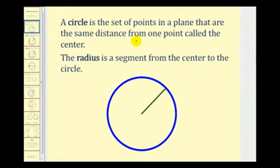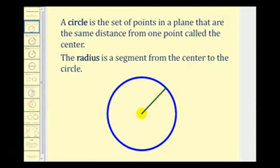A circle is a set of points in a plane that are the same distance from a point called the center. Here we see a blue circle where the center would be this point here.